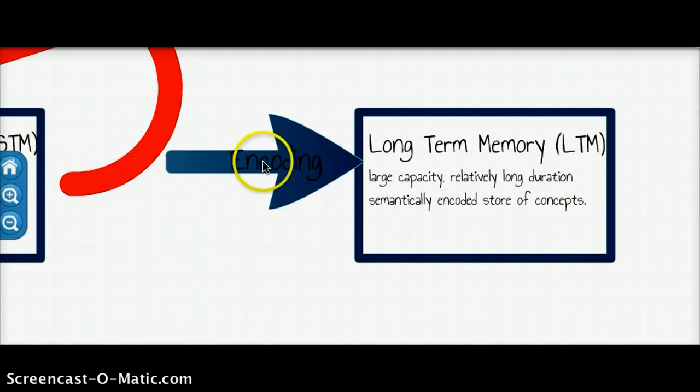Encoding turns acoustic codes into meaning codes of concepts. So instead of us simply saying 3-1-3-2-4-7 to ourselves as the telephone number, sufficient rote rehearsal will turn that into the meaning of "that's Auntie Anne's number" or something like that.